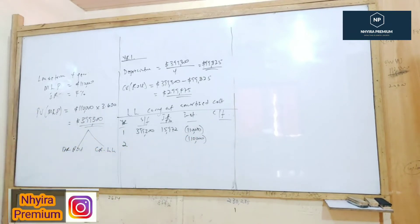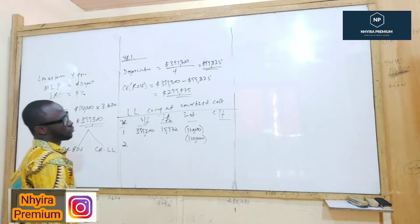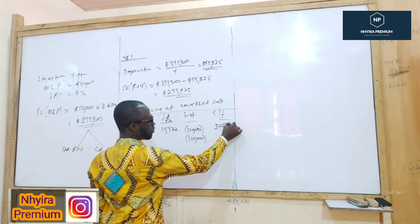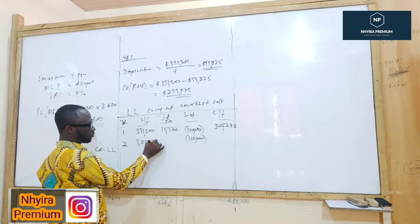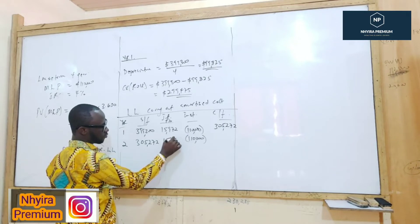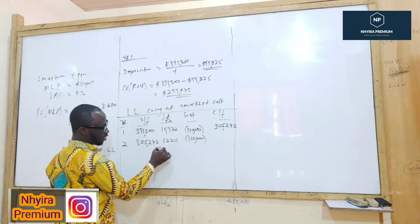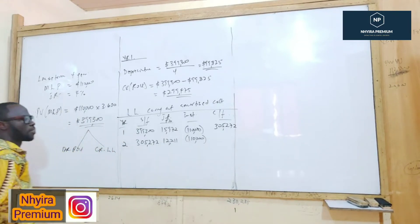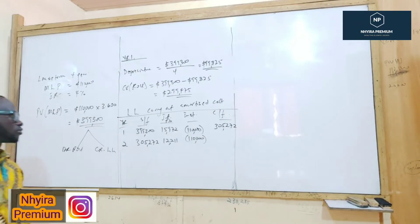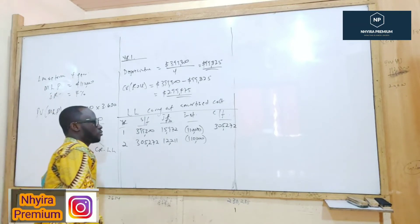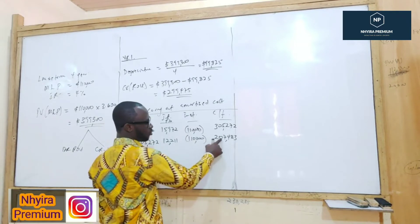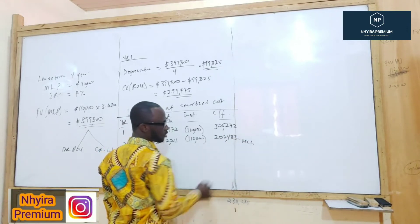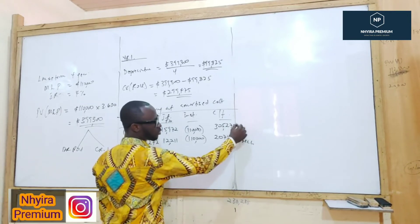For year one, we bring forward £399,300. Four percent of that gives us £15,972 interest. After deducting the installment of £110,000, the closing balance is £305,272. That closing balance becomes the opening for year two. Four percent of £305,272 gives approximately £12,211 interest. After the installment, the year two closing balance is approximately £207,483.